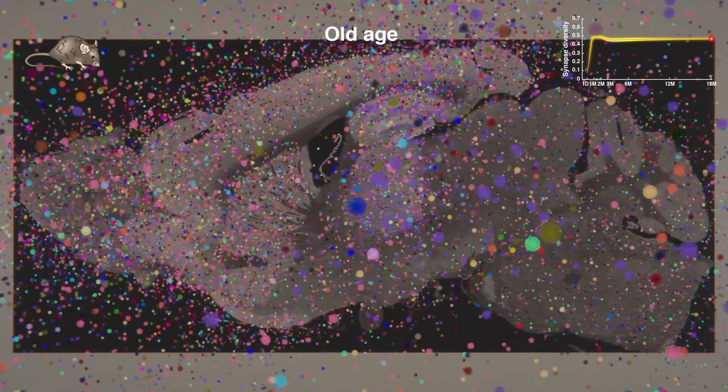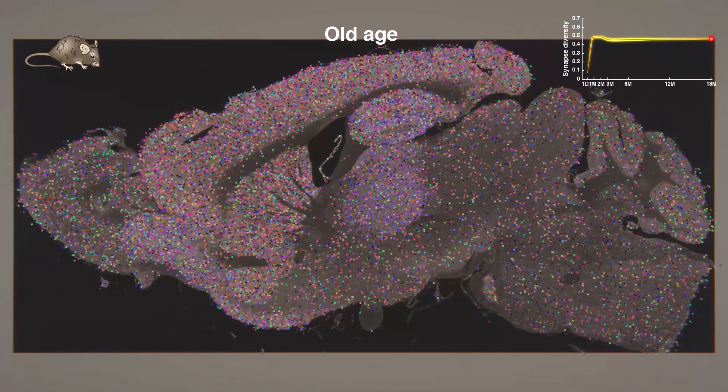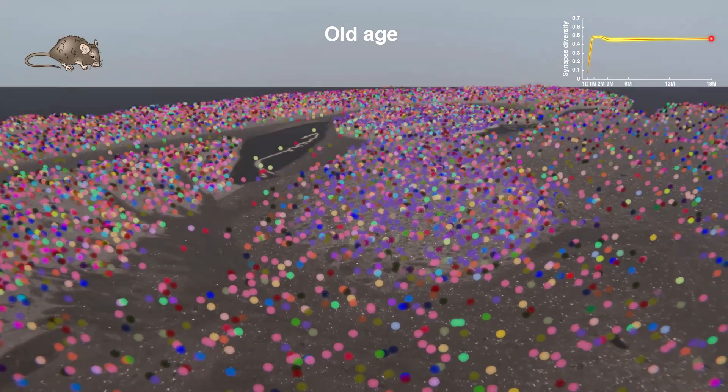In the old brain, there has been a loss of synapses and a change in the composition of synapse types in different brain regions.